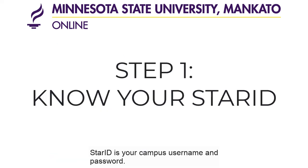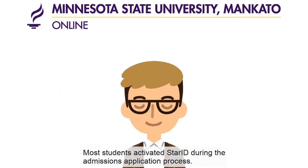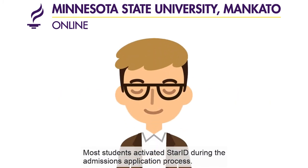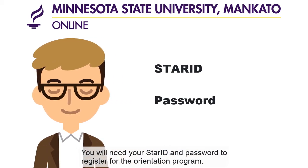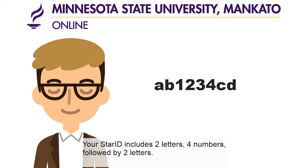Star ID is your campus username and password. Most students activated their Star ID during the admissions application process. You will need your Star ID and password to register for the orientation program. Your Star ID includes two letters, four numbers, followed by two letters.